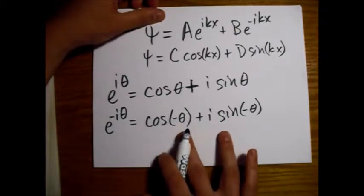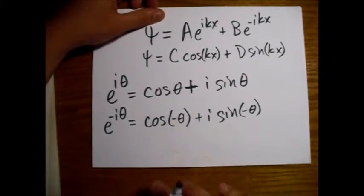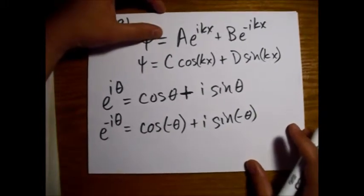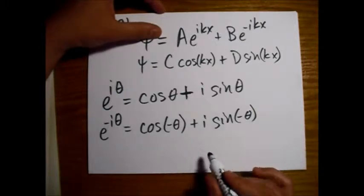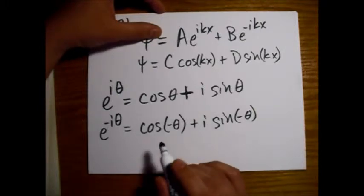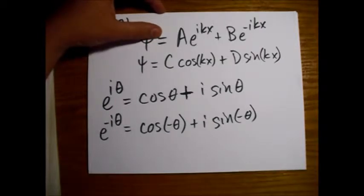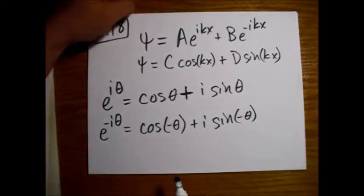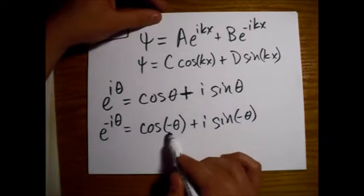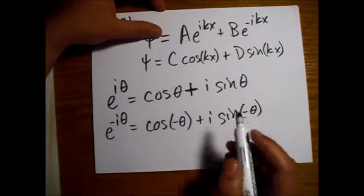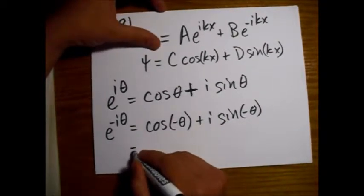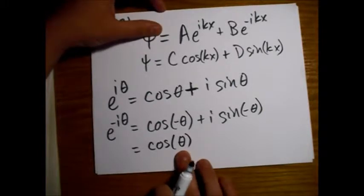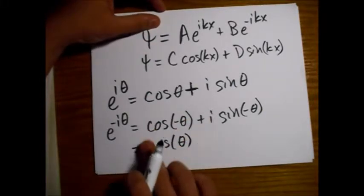Now we just look real quick at the behavior of cosine and sine. If you take a mirror image across the y-axis or whatever, basically cosine is an even function. So if you go out to pi and you go out to minus pi, you'll get the same answer. Same with any other number that you use, any angle. So basically, cosine of minus θ is equal to cosine of θ.